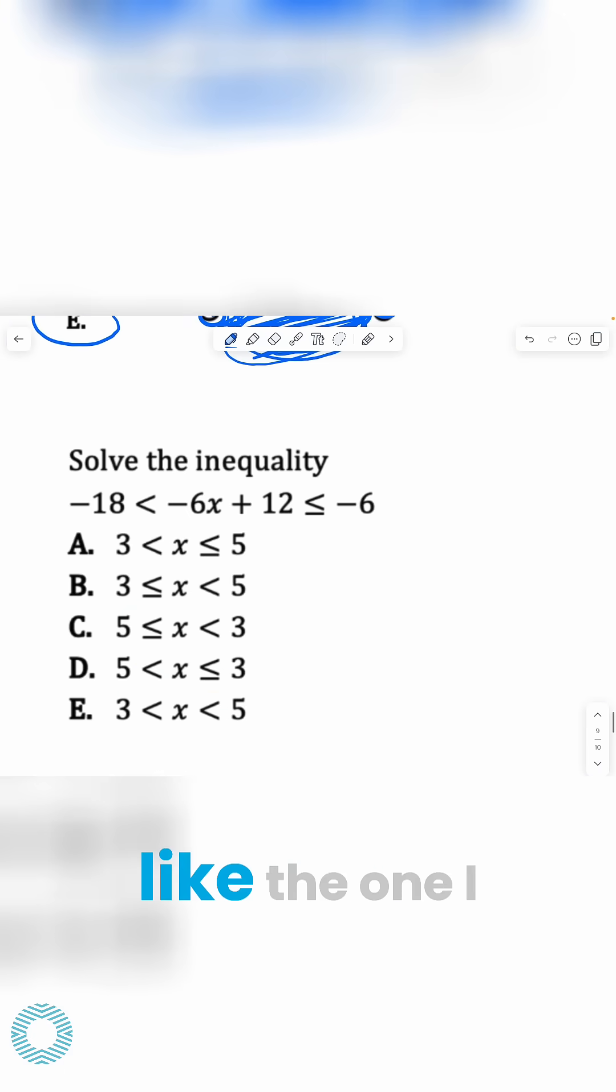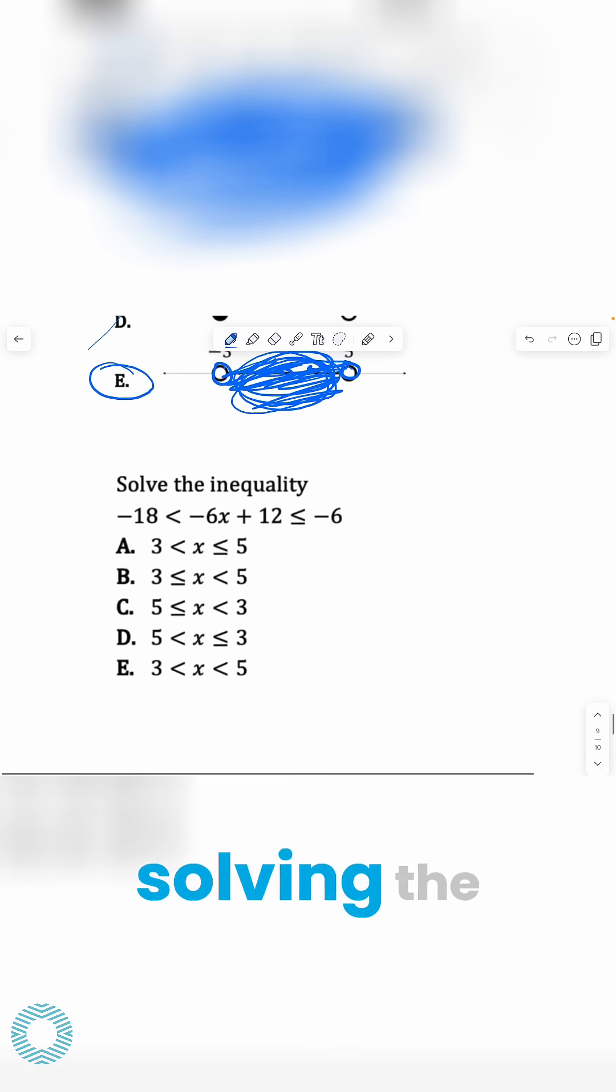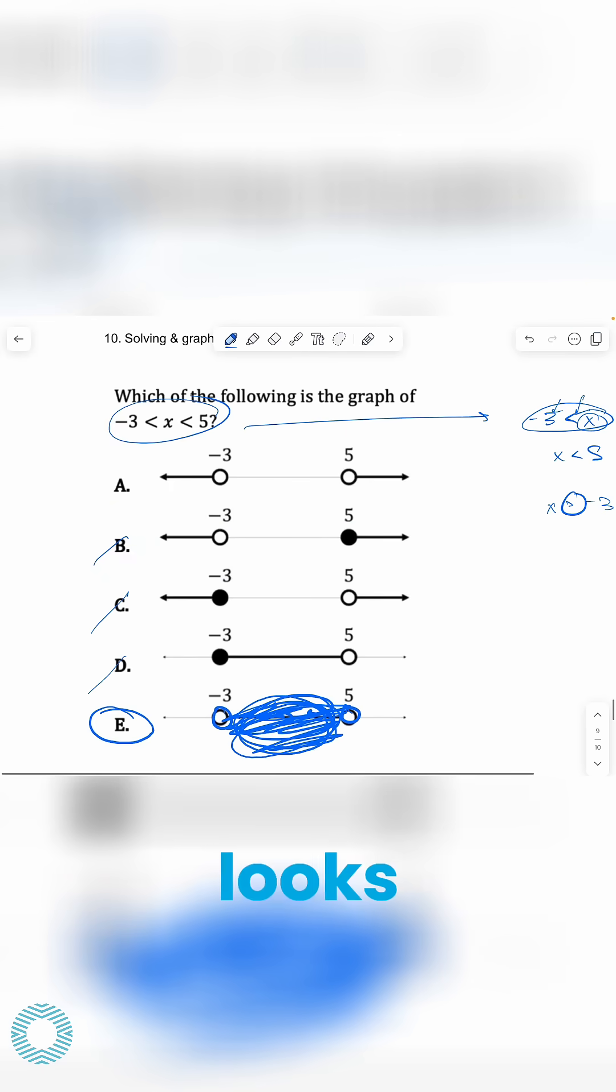Another problem, similar to like the one I did before, but here you're actually solving the inequality because there's an unknown value here, you're going to solve for x. So the way we do this is you treat it as if there's three sides to the problem. So I'm going to do, the whole point is to isolate x and get it to a form that looks somewhat like this.